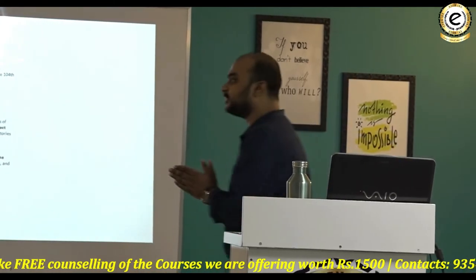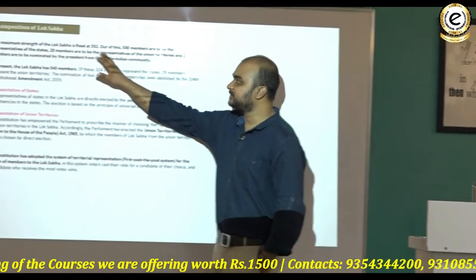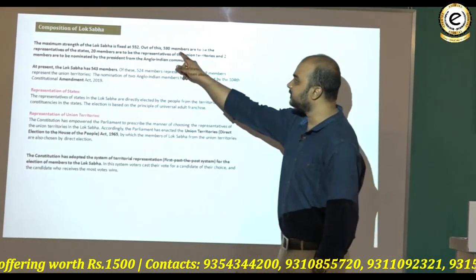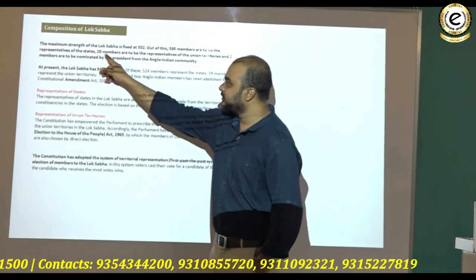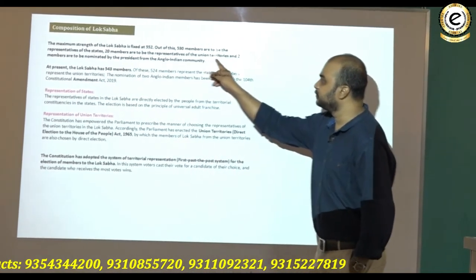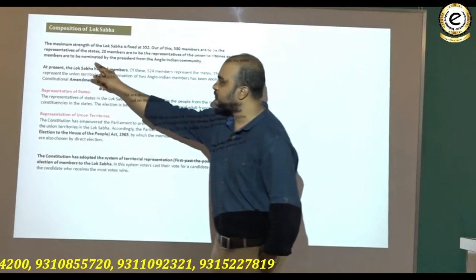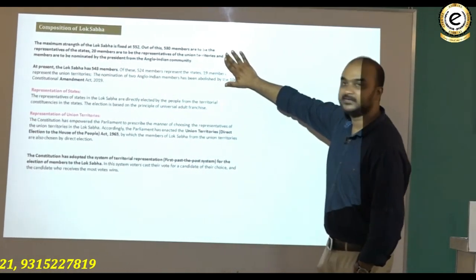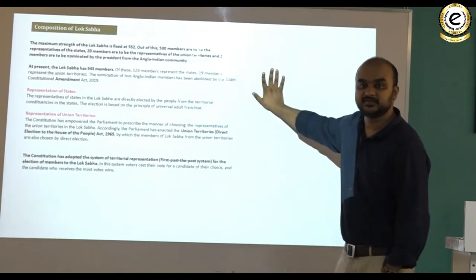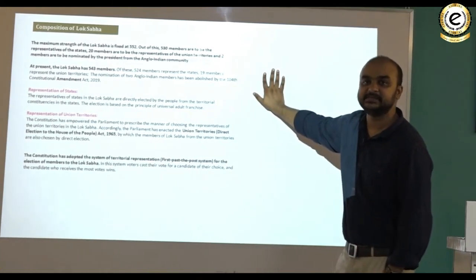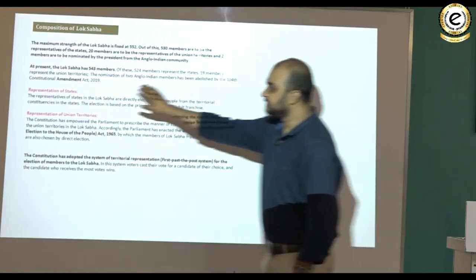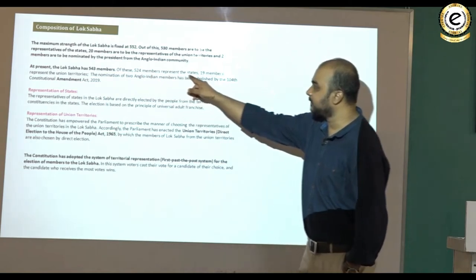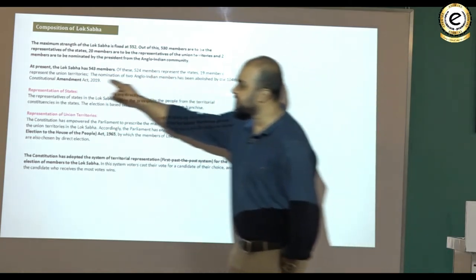The maximum strength of the Lok Sabha is fixed at 552 — it cannot go beyond that. Of these, 530 members are to be representatives of the states, 20 members are representatives of union territories, and 2 members were to be nominated by the president from the Anglo-Indian community. However, the Anglo-Indian nomination has been abolished by the 104th Constitutional Amendment Act. At present, the Lok Sabha has 543 members: 524 representing states and 19 representing union territories.